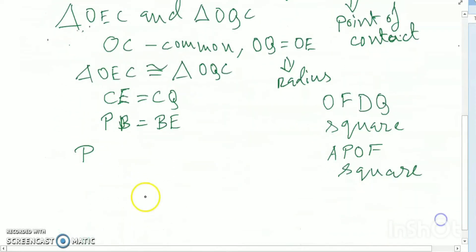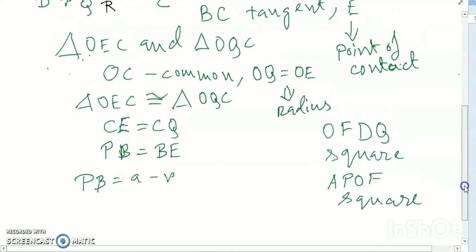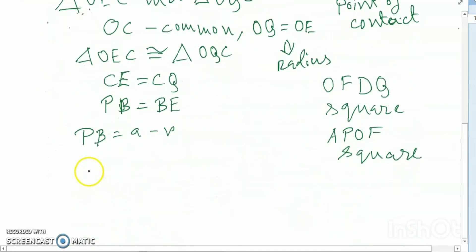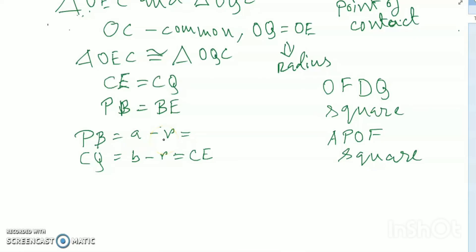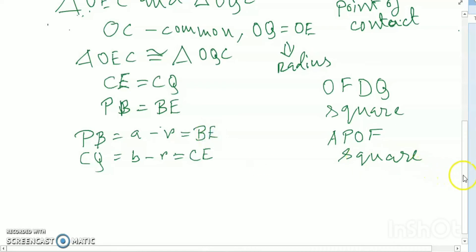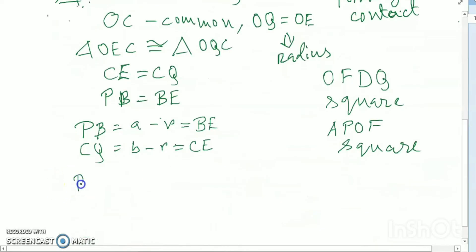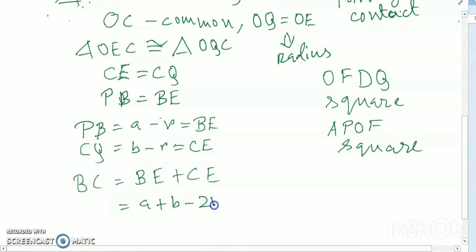So PB equals BE. Therefore BC equals BE plus CE. So BC is equal to a plus b minus 2r.